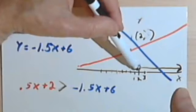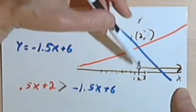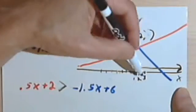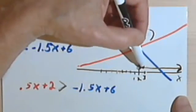Because all I'm looking for is the places on that number line where the red line has a greater value, where it's higher. So that's going to be everywhere greater than 2.